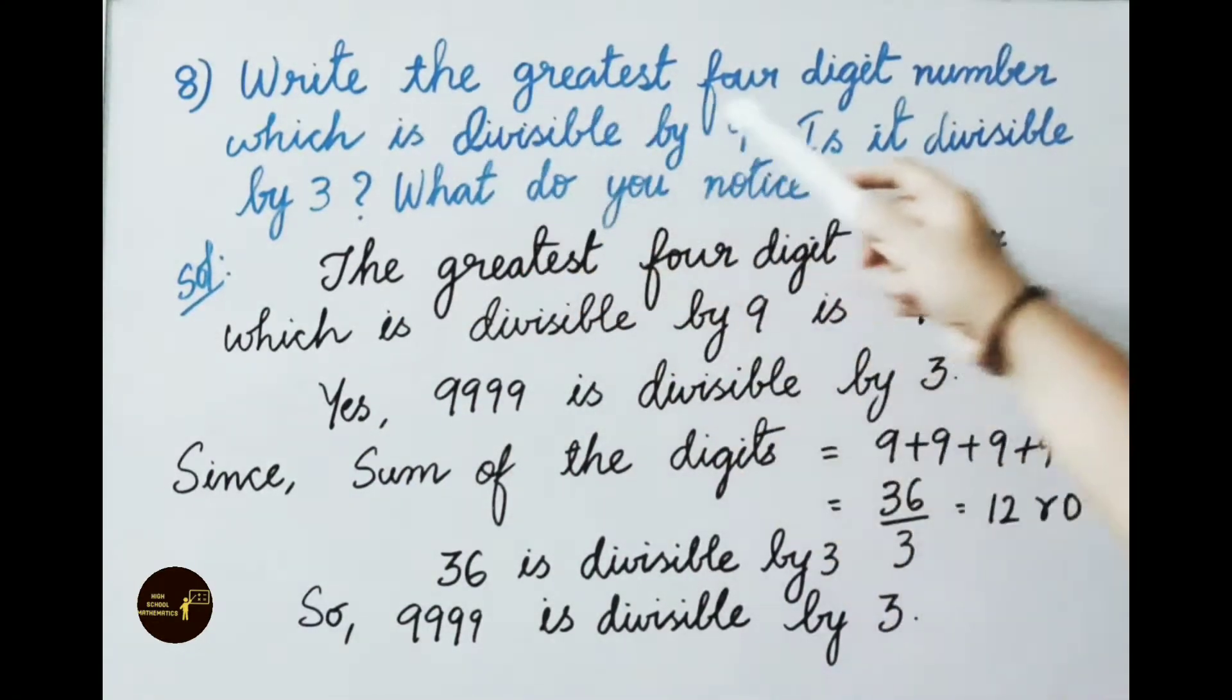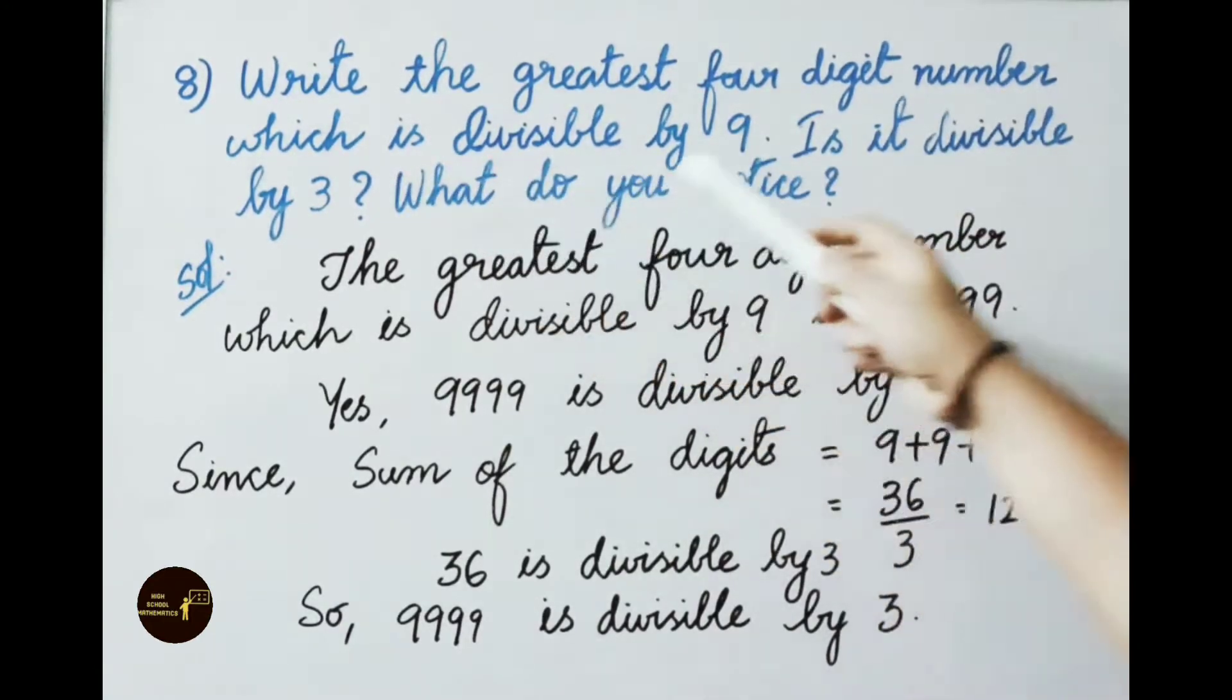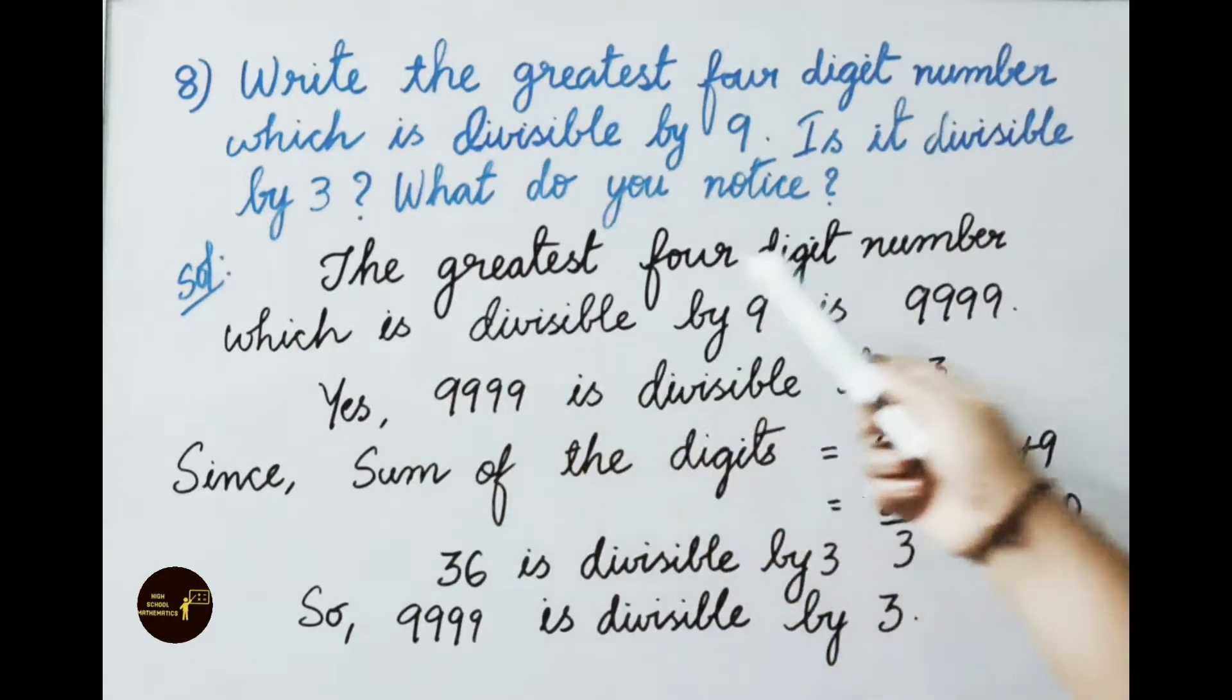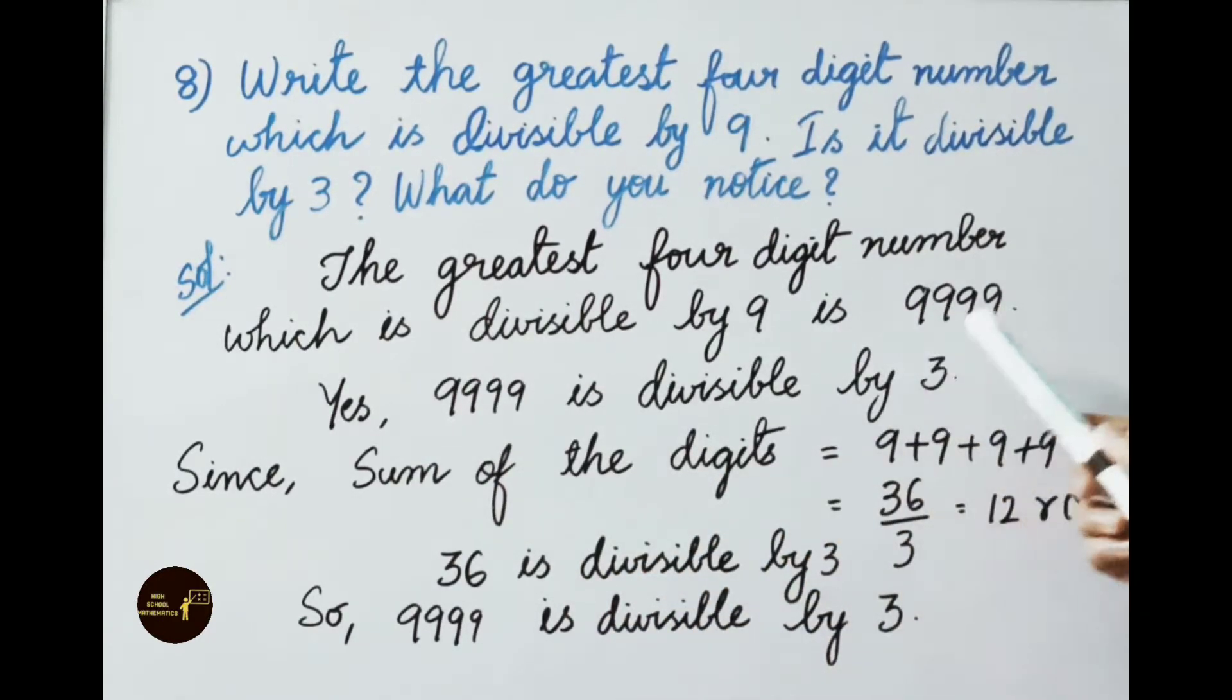See the 8th question. Write the greatest 4-digit number which is divisible by 9. See the solution. The greatest 4-digit number which is divisible by 9 is 9999. Yes, 9999 is divisible by 3. Since sum of the digits equals 9 plus 9 plus 9 plus 9, that equals 36. 36 is divisible by 3, 12 times and leaves a remainder 0. Therefore 36 is divisible by 3. So the given number 9999 is divisible by 3. We notice that the numbers that are divisible by 9 are also divisible by 3.